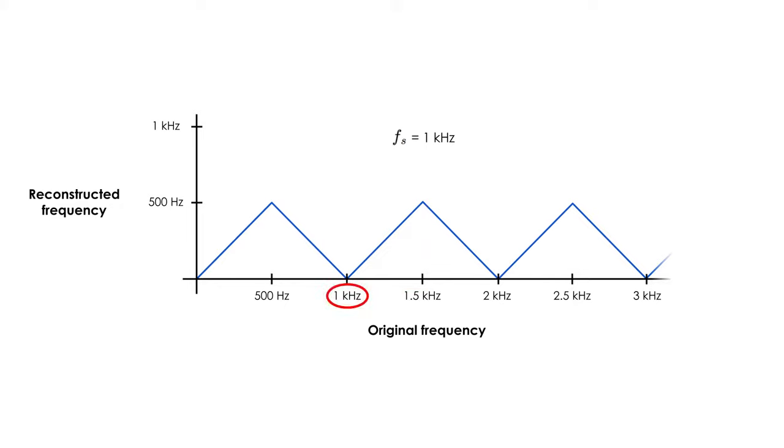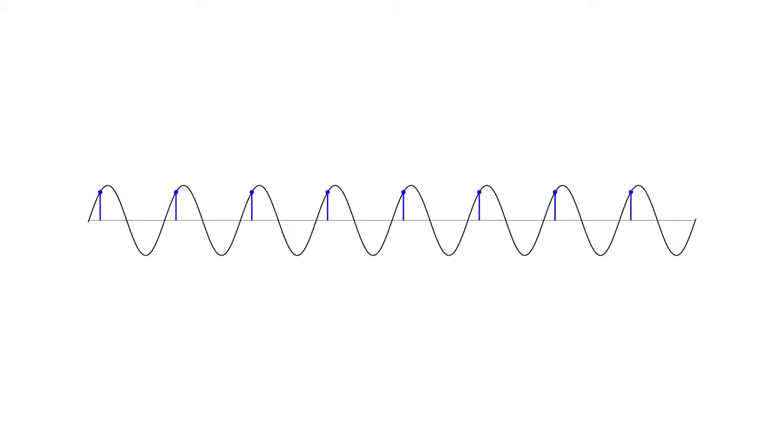An interesting case is when we have an original frequency of 1000 Hz, and a sampling frequency of 1000 Hz, which gives us a reconstructed frequency of 0 Hz. When the original frequency and the sampling frequency are equal, we will be taking exactly two samples per cycle, which is considered a frequency of 0 Hz.